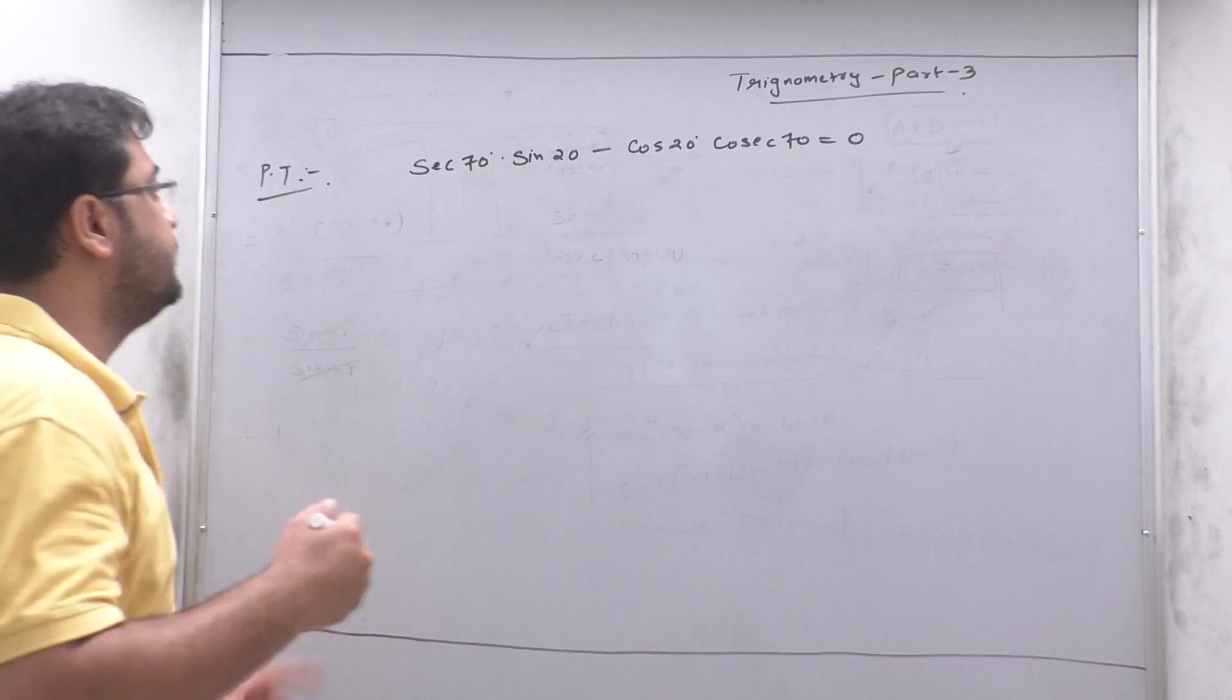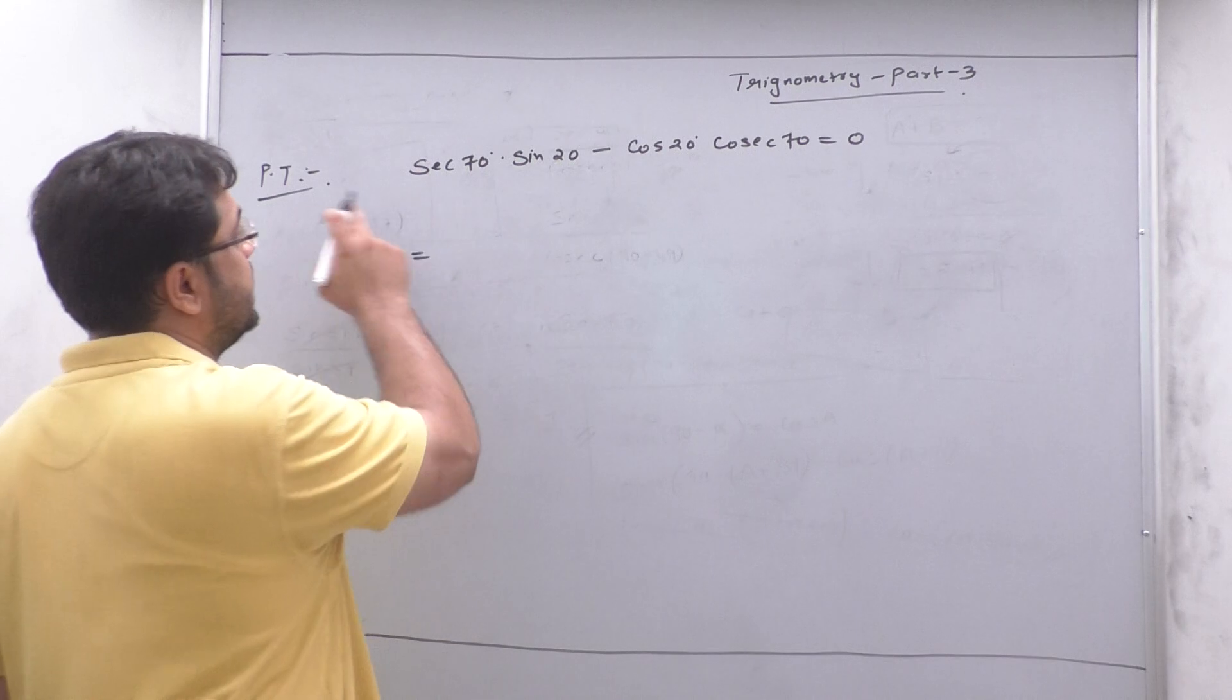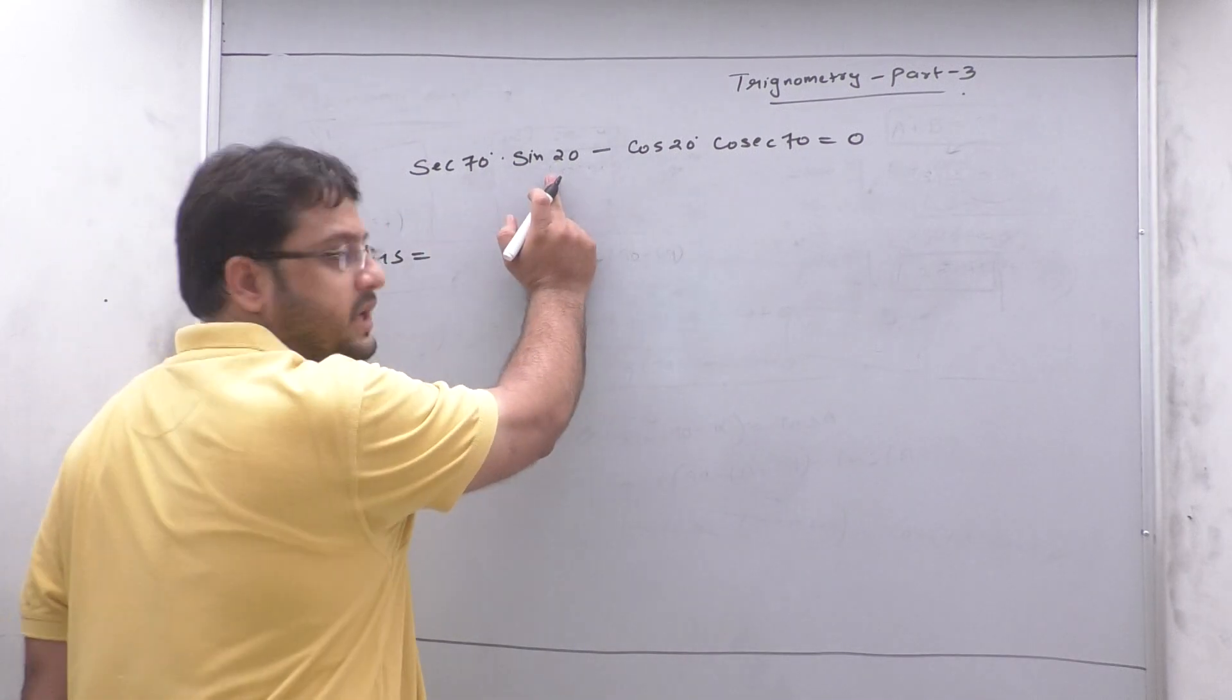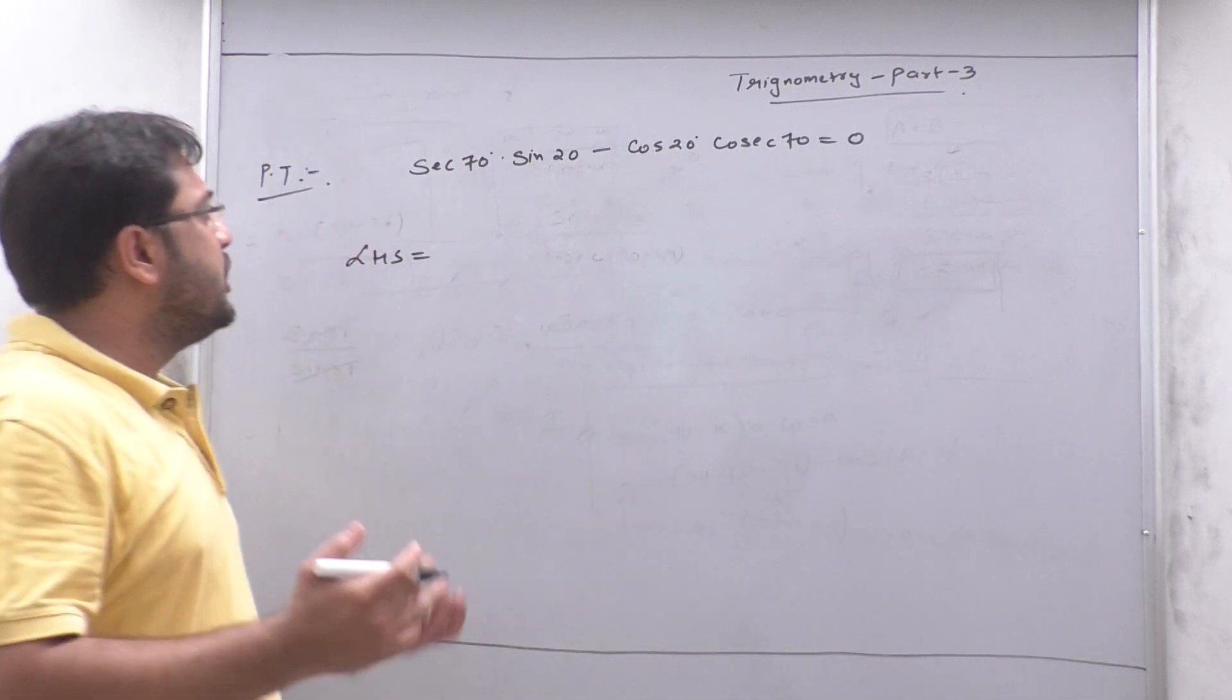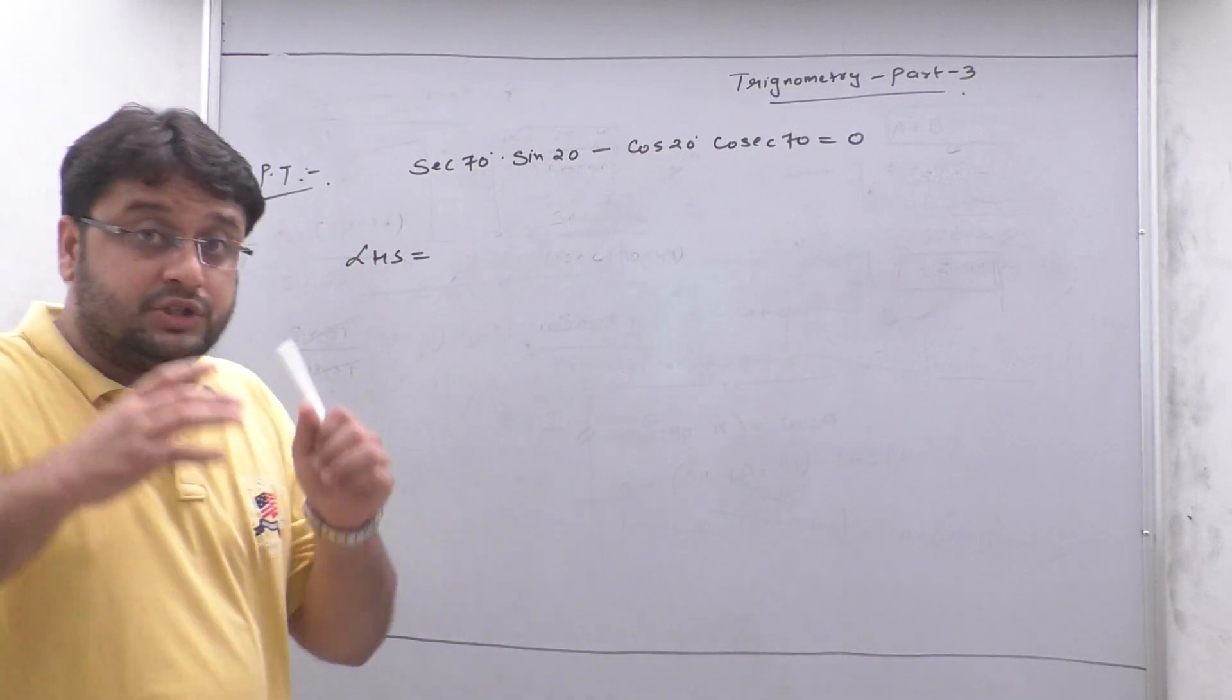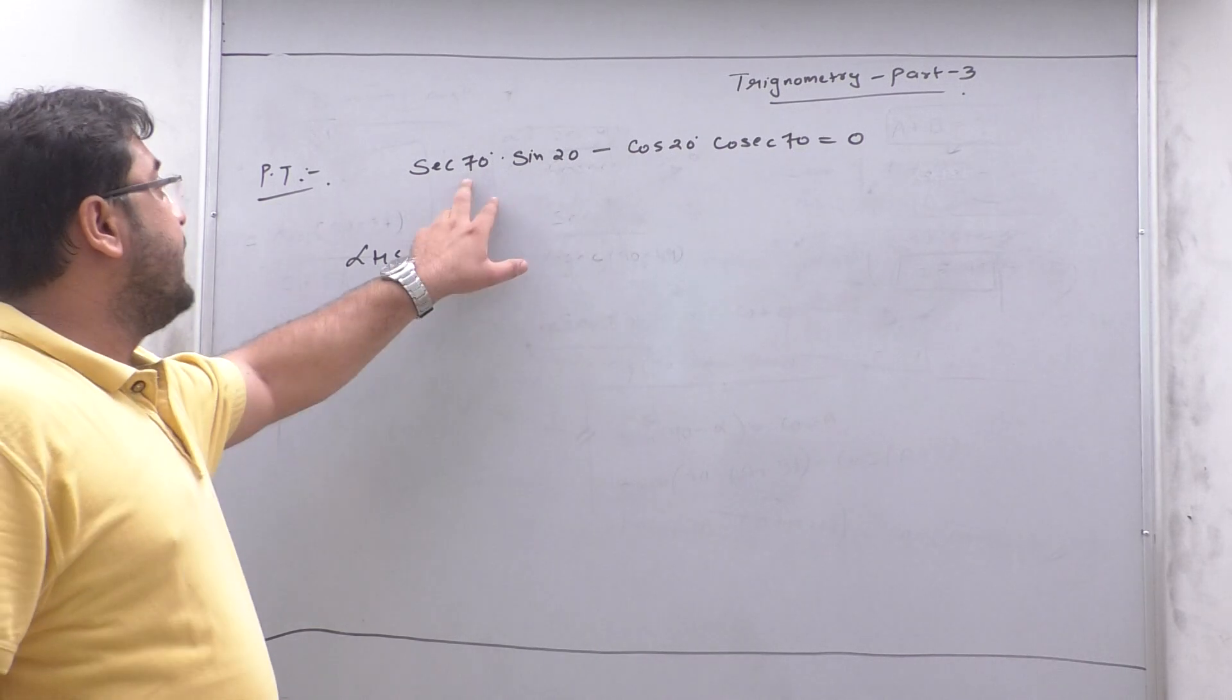Let's start with LHS. Question is, LHS is equal to, sorry, question is what we have to do is sec 70 sin 20 minus cos 20 sec 70 equal to 0. Now, see, single question, you know, I will follow you with this question, which is 90 minus theta. And now come back.